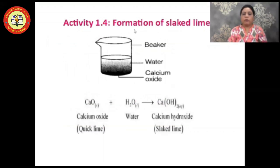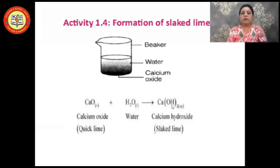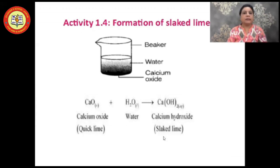Activity 1.4: Formation of slaked lime. As you can see in the figure, in a vessel filled with water, when calcium oxide is added, calcium oxide reacts with water to form calcium hydroxide. The molecular formula of calcium oxide is CaO. Calcium oxide reacts with water to form calcium hydroxide, written as Ca(OH)₂. Please note that calcium oxide is also known as quick lime, and calcium hydroxide is known as slaked lime.